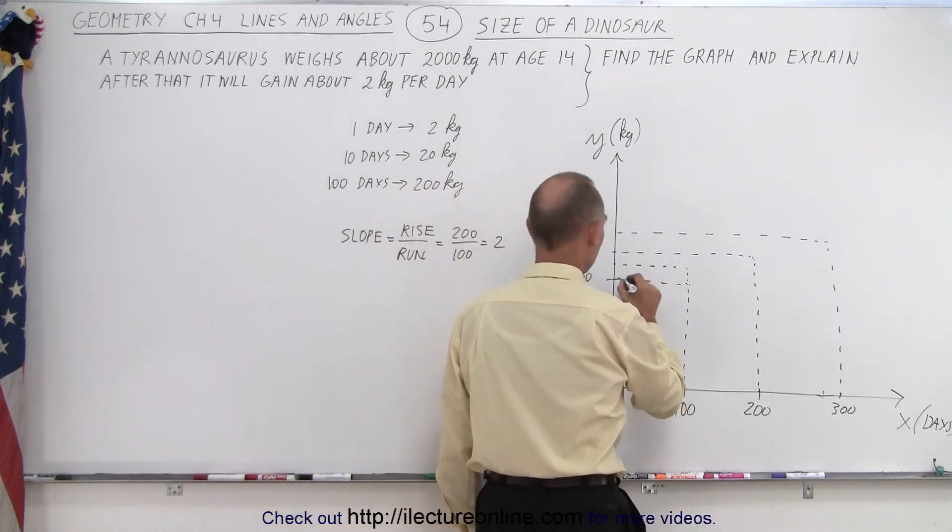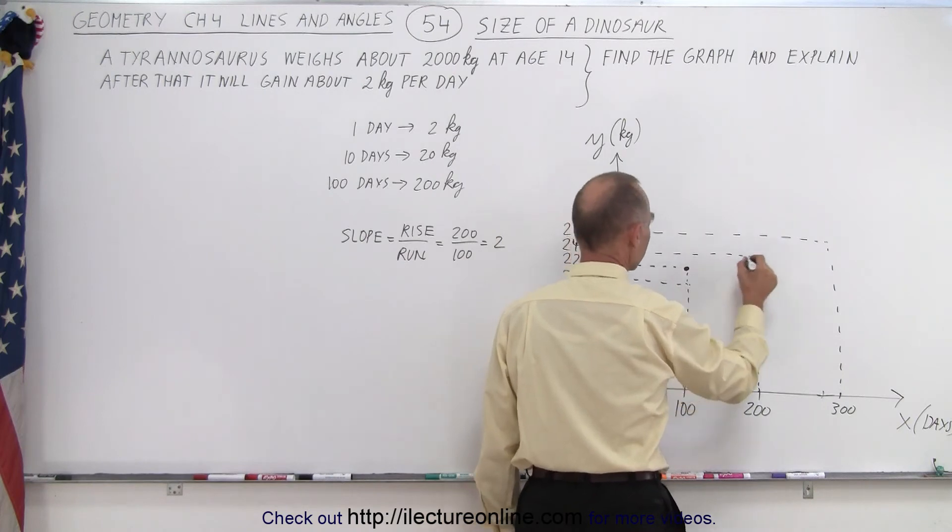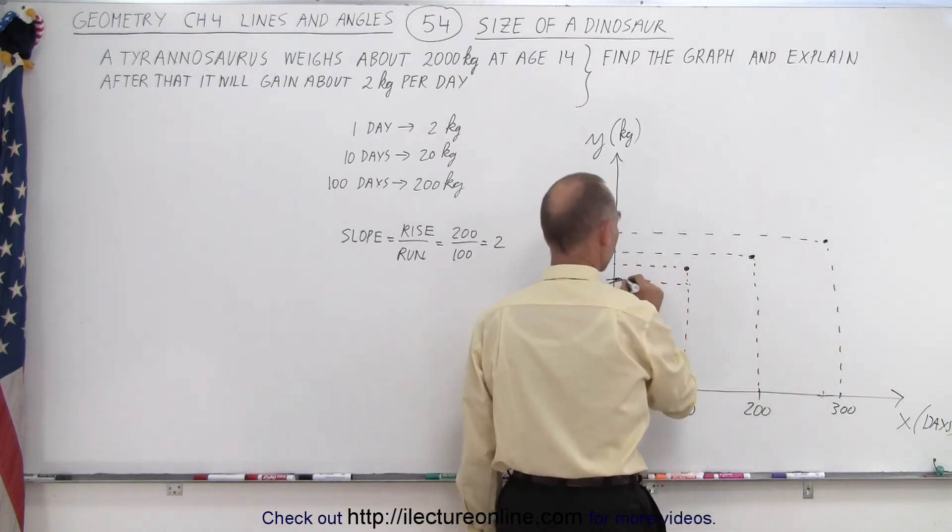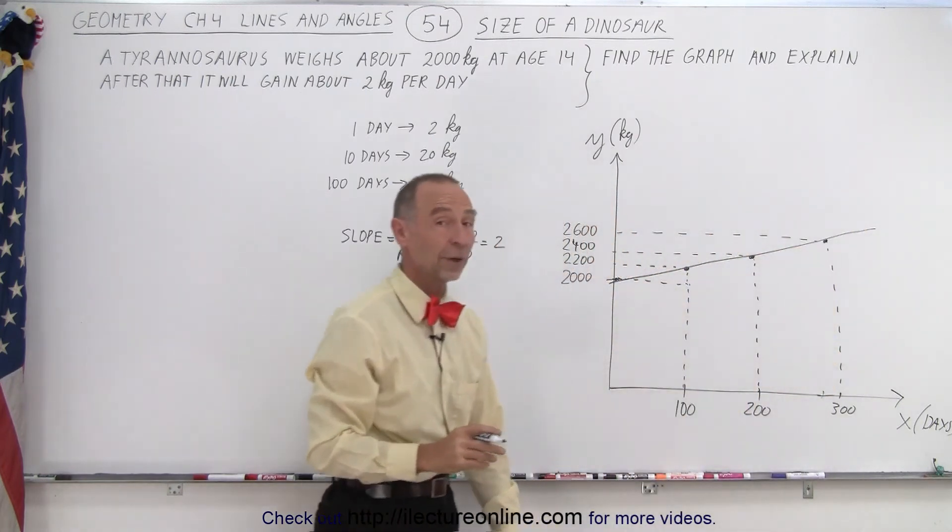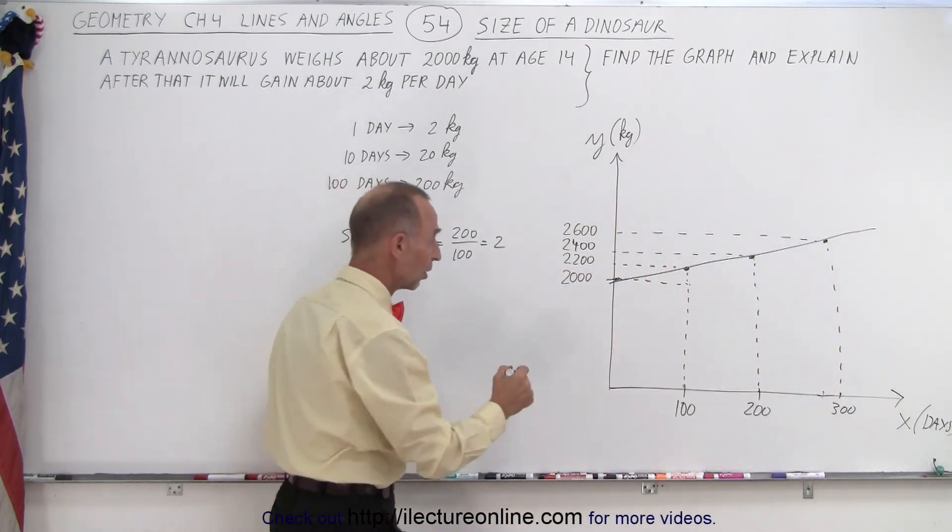If you then connect these points, these points right here to this point right here, you can see that this line now represents the weight of a Tyrannosaurus rex dinosaur starting at age 14.